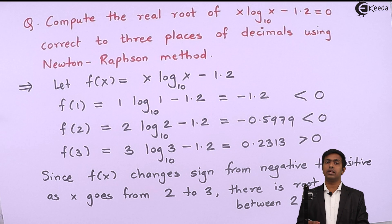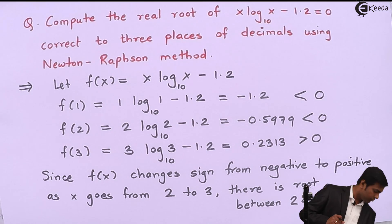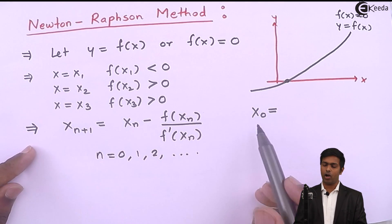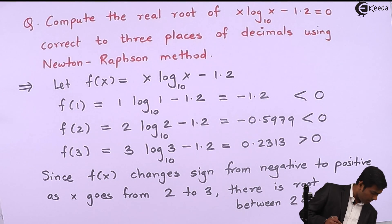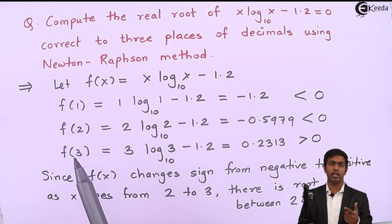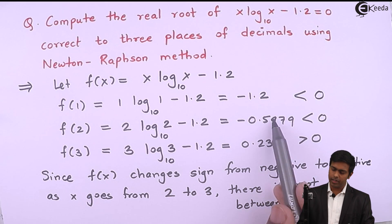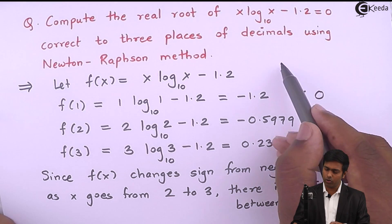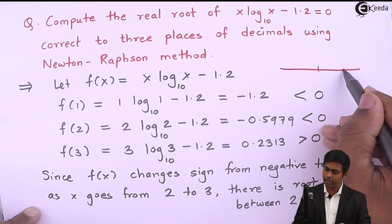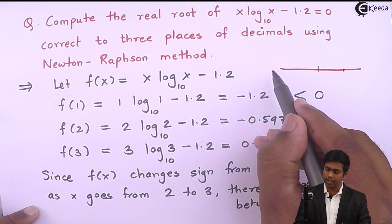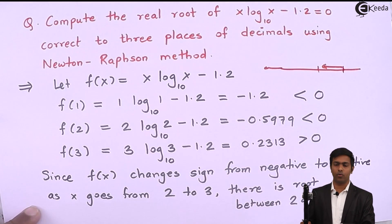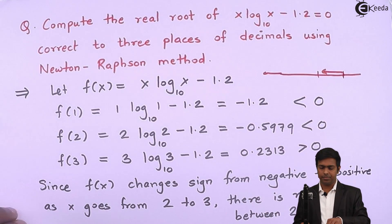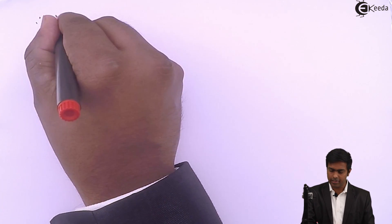To get the root we will use Newton-Raphson method. We know the formula; we need the values of f of xn, f dash of xn, and the initial root x0. Looking at the two function values, 0.2313 is closer to 0 than minus 0.5979 is, so we consider x0 equal to 3, as the function value at x equal to 3 is the nearest to zero.